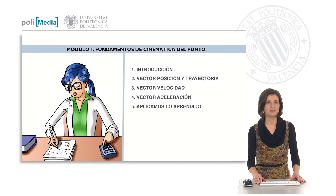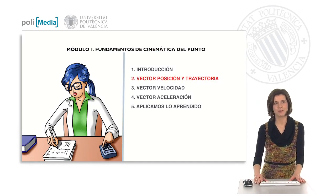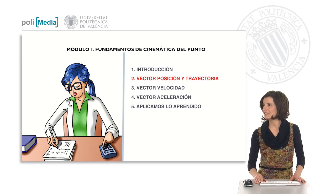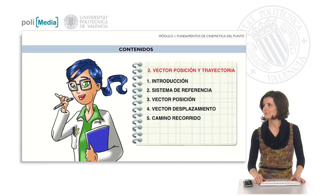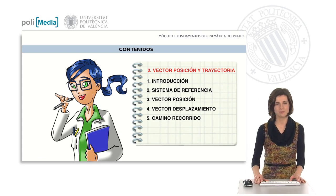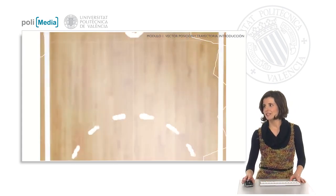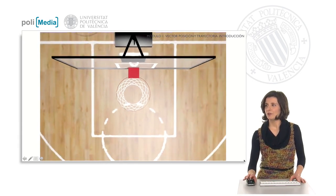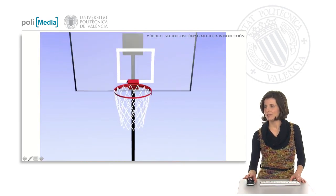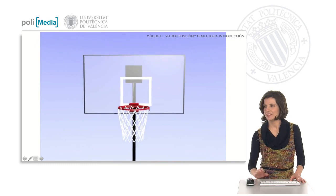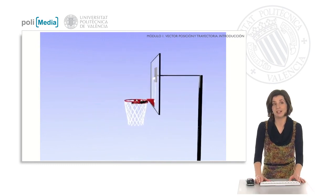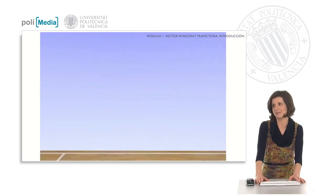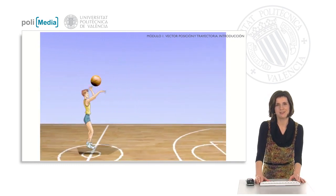Hello. In today's class, we are going to see what is the position vector and the concept of trajectory. We will talk about reference system, position vector, displacement vector, and path traveled along the trajectory. And all this in our usual scenario, in our basketball court, with the objective of helping J to score a well-deserved 3-pointer.